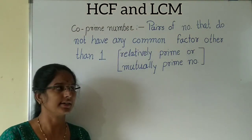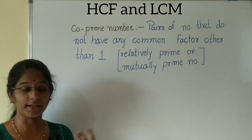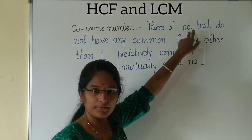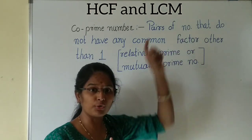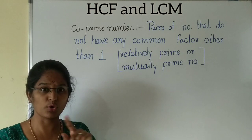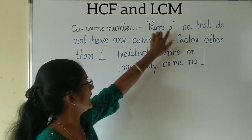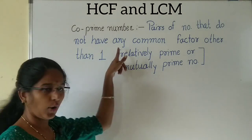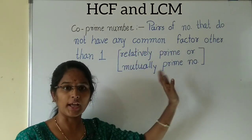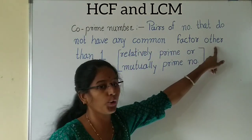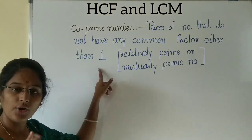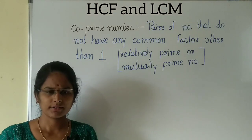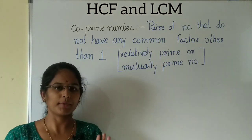In the last lesson we discussed what is a prime number. Now, here is a pair of numbers — pair of numbers means not only one number, more than one. A pair of numbers that do not have any common factor other than 1. There can be 2 or 3 numbers, but typically a pair means 2 numbers.